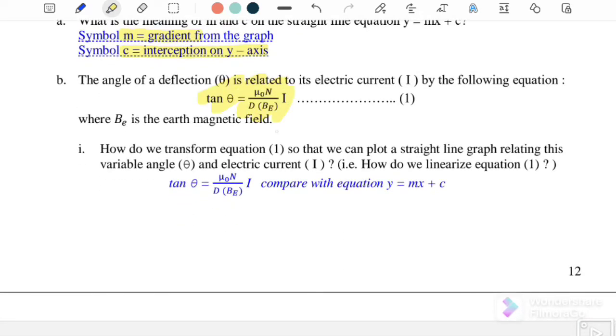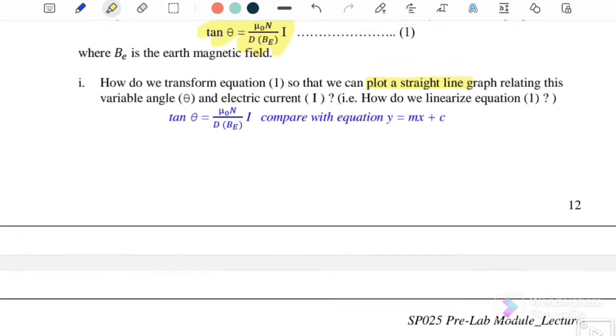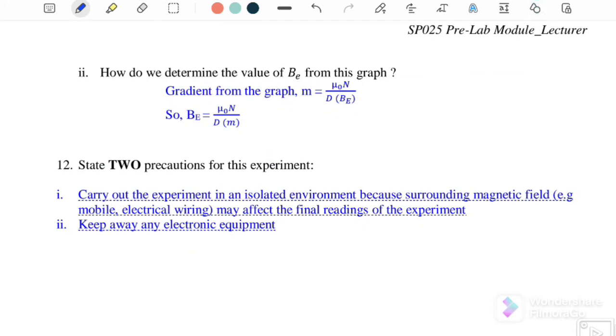From the equation tan θ = (μ₀nI)/(dB_E), how do we transform equation one to plot a straight line graph relating angle and electric current? Comparing y = mx + c, tan θ is the y-axis, I is the x-axis, and μ₀n/(dB_E) is the gradient. How do we determine B_E from the graph? The gradient m = μ₀n/(dB_E), so B_E = μ₀n/(dm), where m is the gradient.